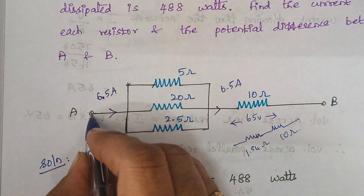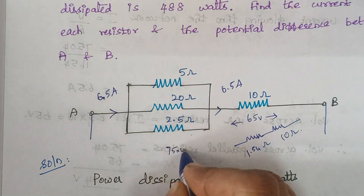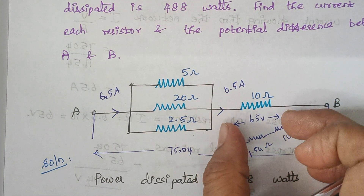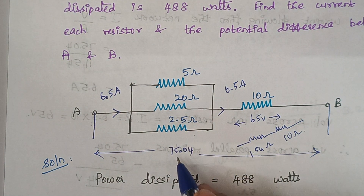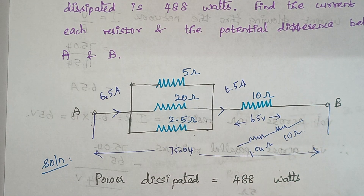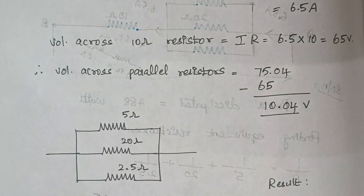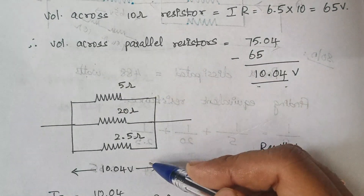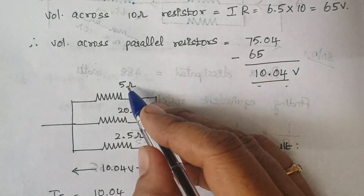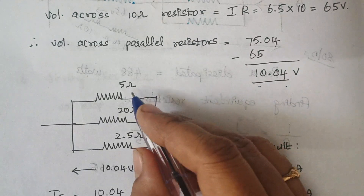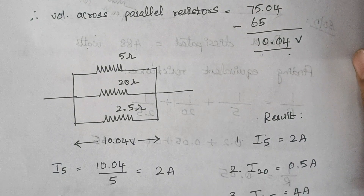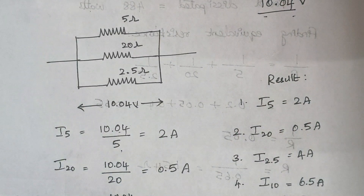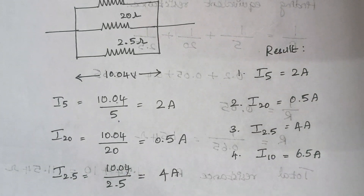And here, the total voltage — that is, voltage across A-B — is calculated as 75.04 volts. So now here it is 65 volts. Then what about the voltage across this parallel combination? You have to subtract: 75 minus 65, which is approximately 10 volts, or more precisely 10.04 volts. This 10.04 volts is impressed across this parallel combination. We know V, we know R. Therefore, current through the 5 ohm resistor is V by R = 2 amps, through the 20 ohm it is 10.04/20, and through 2.5 ohms it is 4 amps.